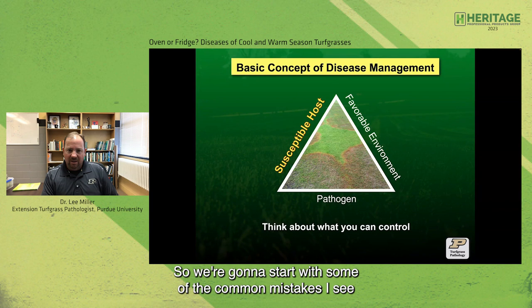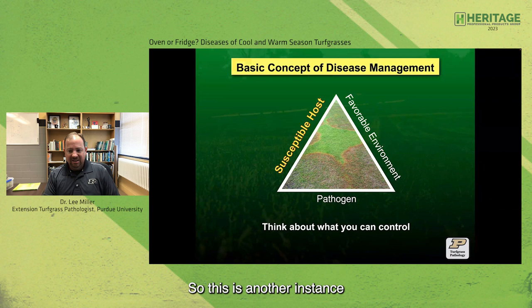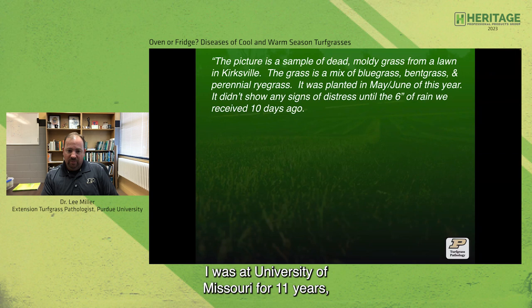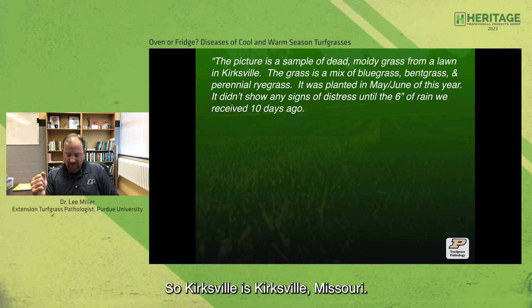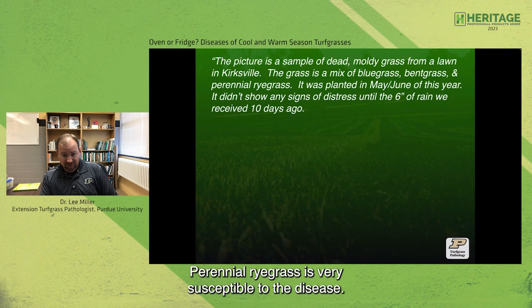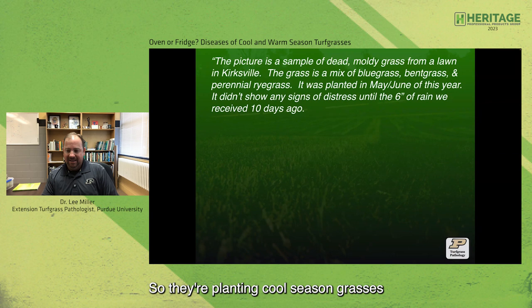We're going to start with some of the common mistakes I see with turf grass selection. For example, in one case with a homeowner from Kirksville, Missouri, bent grasses are for golf courses, perennial ryegrass is very susceptible to disease, and they planted cool season grasses in May or June — right before the hottest part of the year. They're basically putting babies out there and asking them to run a marathon.